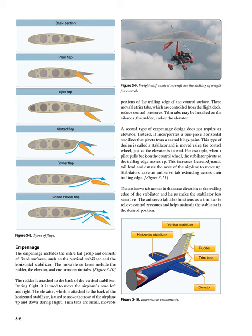The elevator, which is attached to the back of the horizontal stabilizer, is used to move the nose of the airplane up and down during flight. Trim tabs are small, movable portions of the trailing edge of the control surface. These movable trim tabs, which are controlled from the flight deck, reduce control pressures. Trim tabs may be installed on the ailerons, the rudder, and/or the elevator.